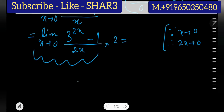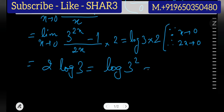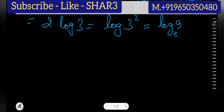Correlating with the formula, this gives log of 3 times 2, which means it is 2 log 3. Applying the formula of logarithm, this can be written as log of 9. Of course, the base of the logarithm is e. Now we will take up one more problem.